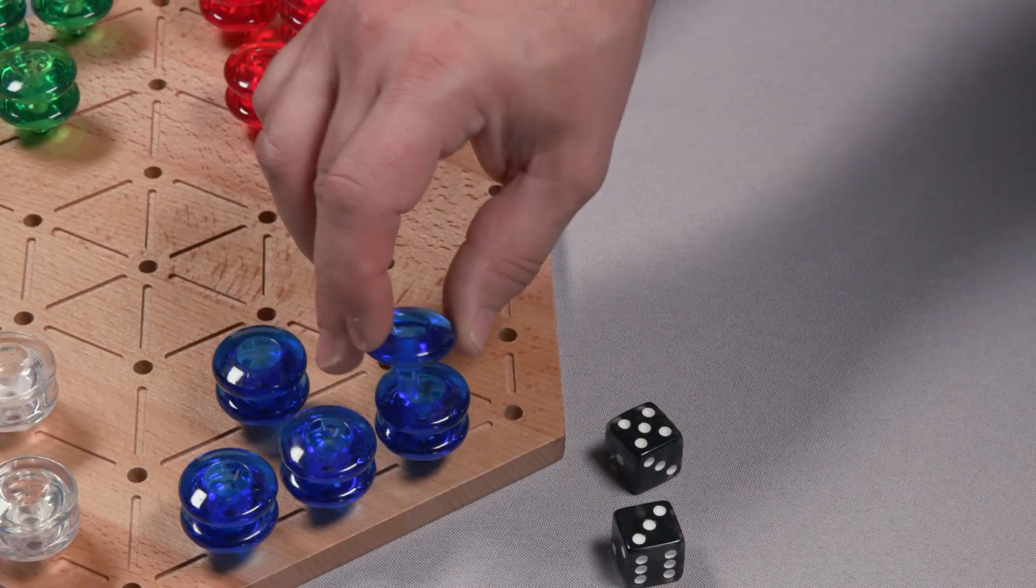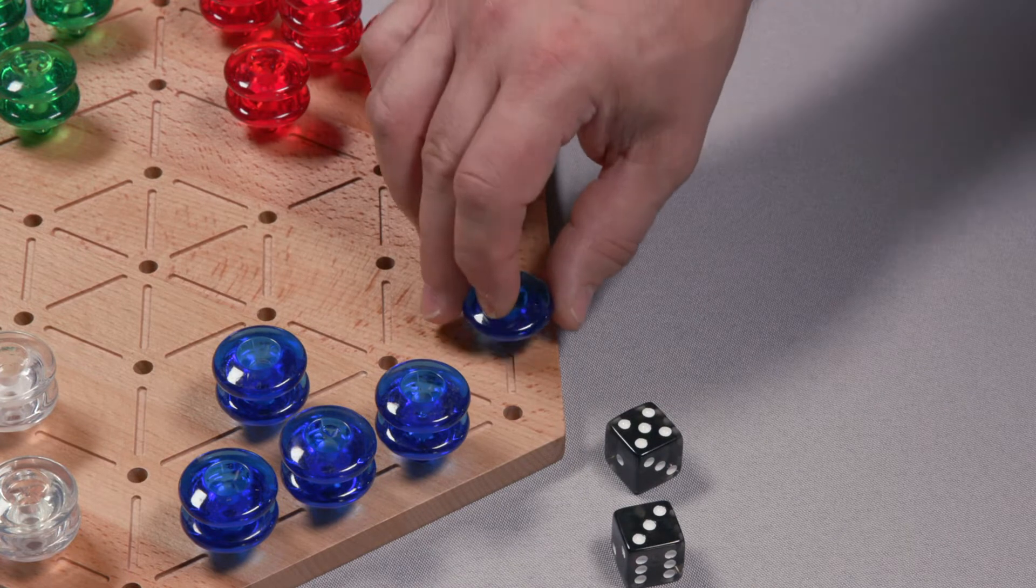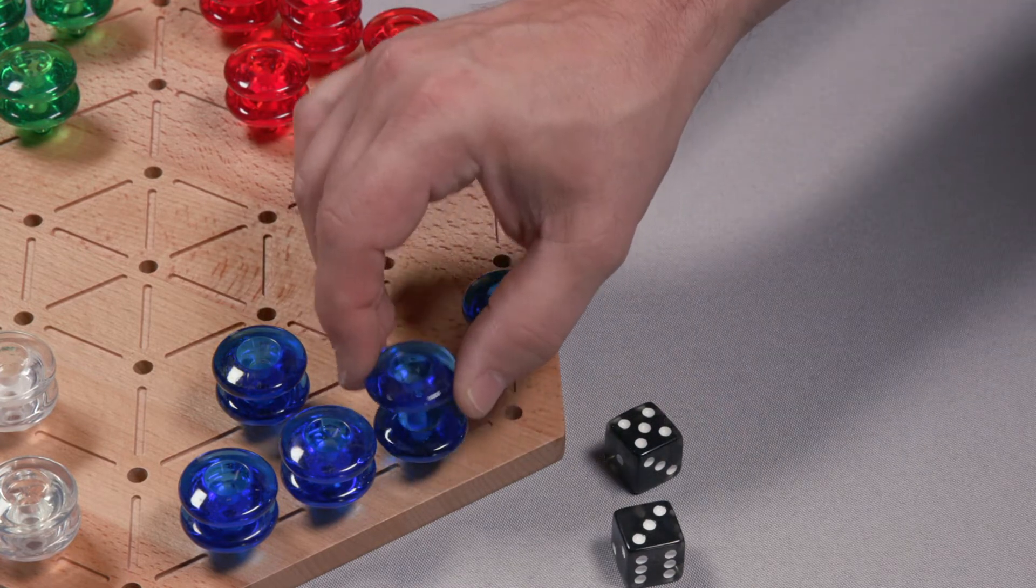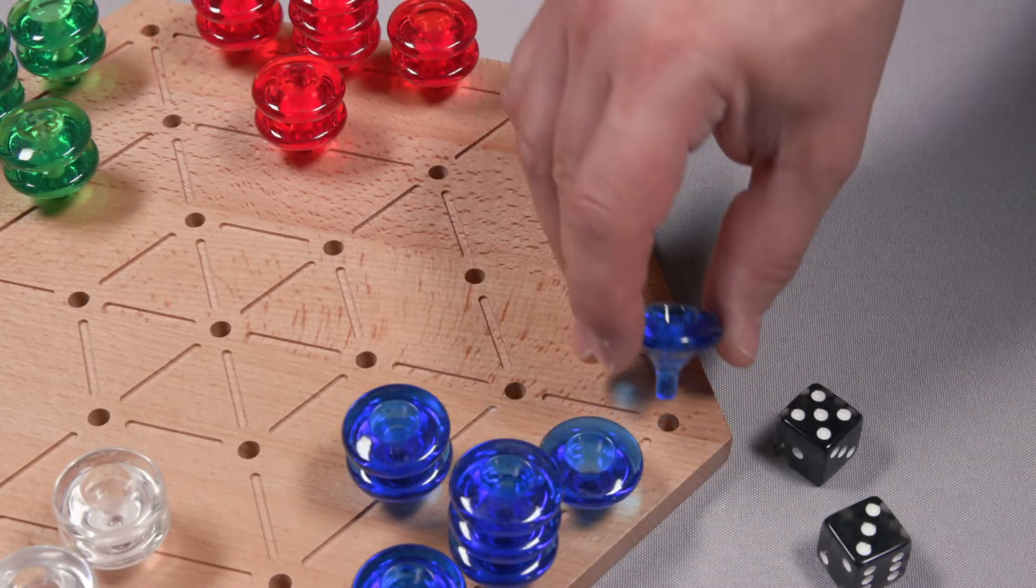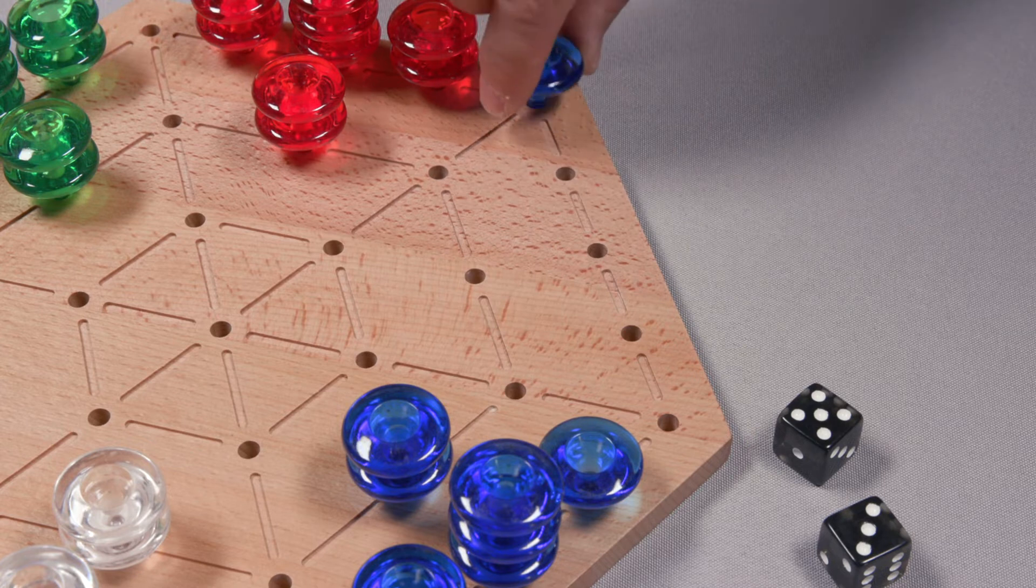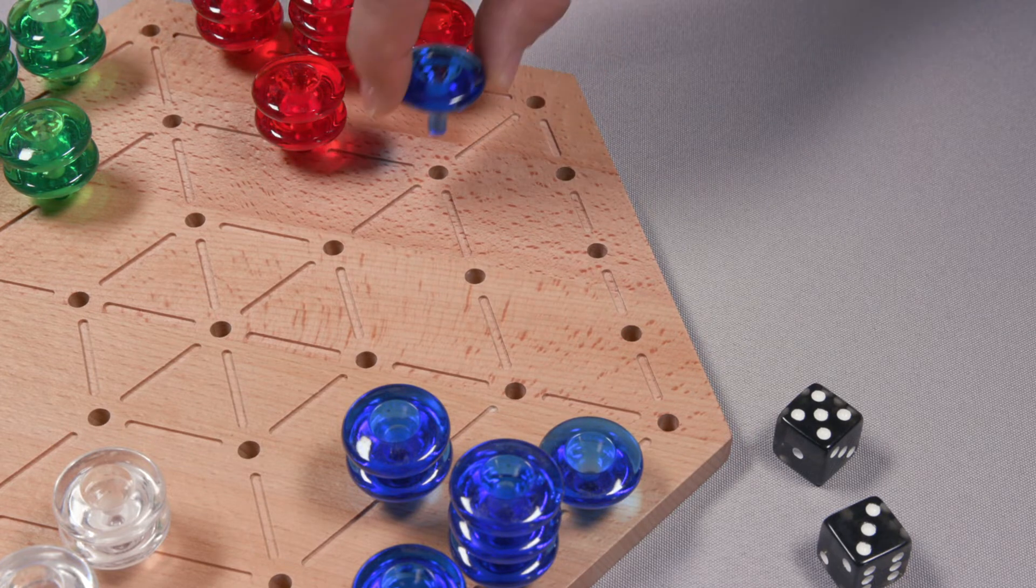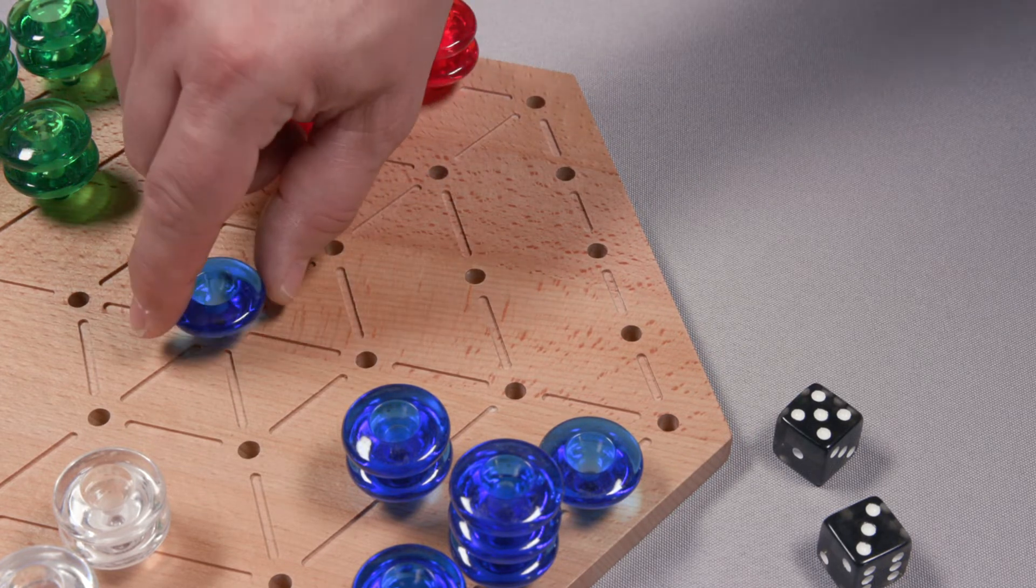For example, if you roll a 3 and a 5, you can move one piece 3 spaces and another piece 5 spaces. Or, you can move one piece 5 spaces and then 3 more spaces. If you are moving the same piece, you may only change direction between the moves for each die.